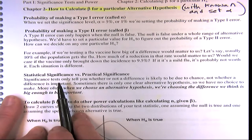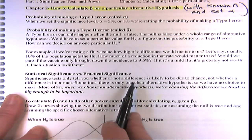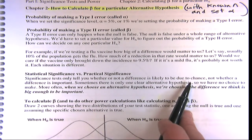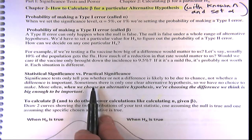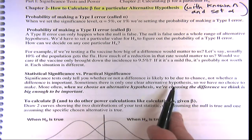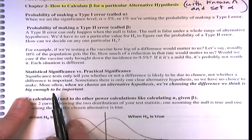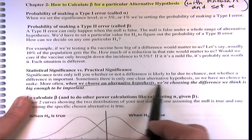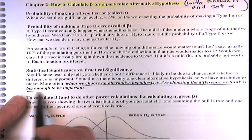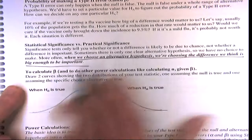We're going to start with a simple example where we know the sample size already and we're setting the significance level. Significance tests only tell you whether a difference is likely due to chance, not whether the difference is important. Sometimes there's only one clear alternative — like guilty or innocent, or disease or not — and we have no choice.